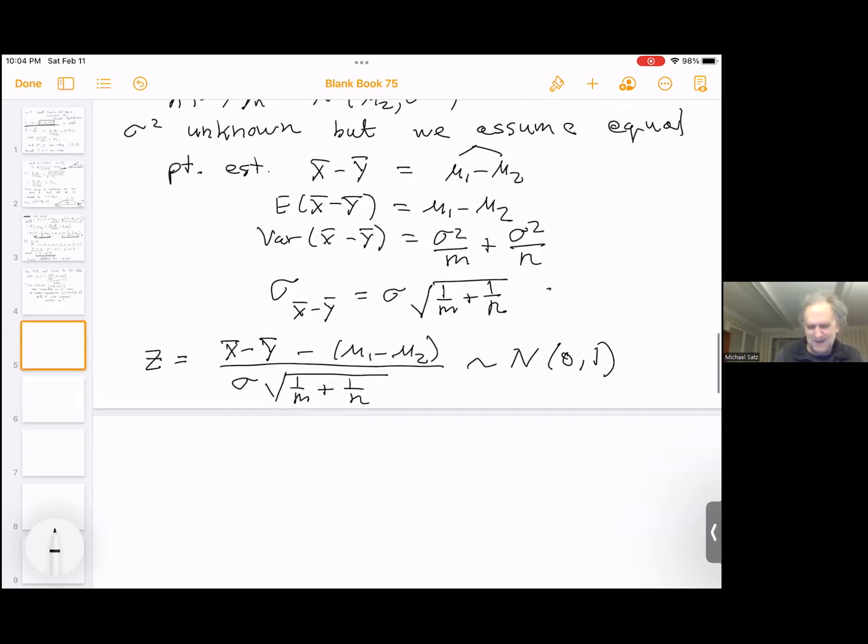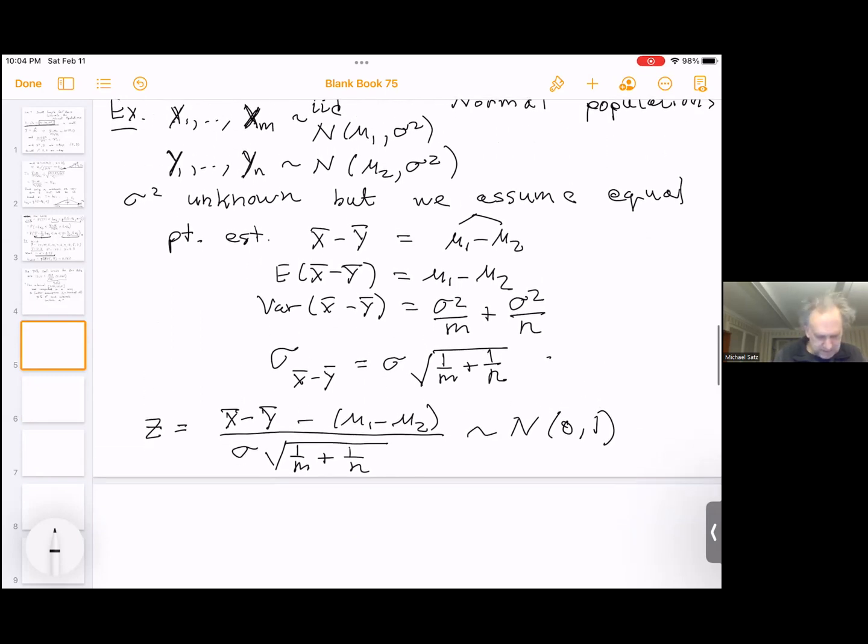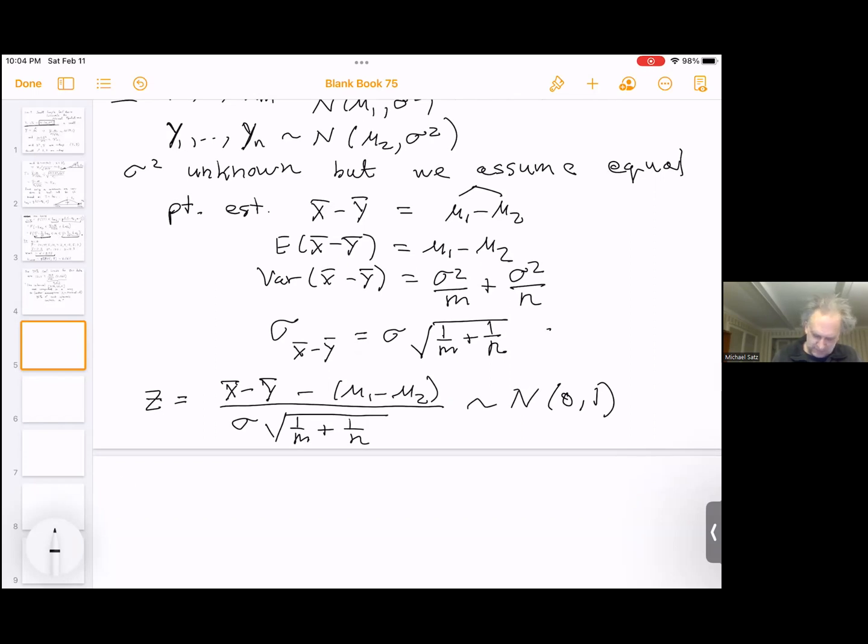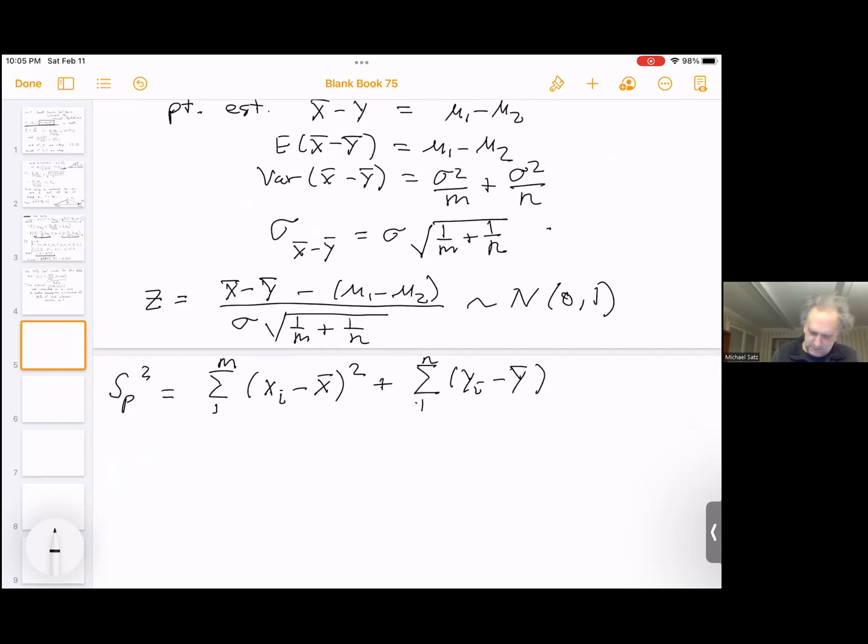Also, what do we use for s squared? Well, we'll show that s squared, if we take the right thing, will still be independent of z, and will be still chi squared distributed. So let's do that now. We'll call it sp squared for pooled. Sp squared, the pooled sample variance, should be computed this way. We don't want to take the same mean and mix them all together. We are assuming they're different, so the variance of each population separately should be estimated this way.